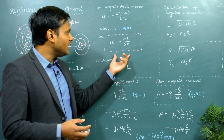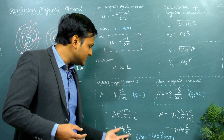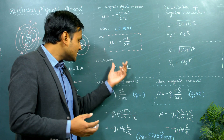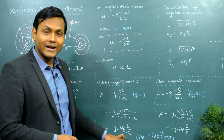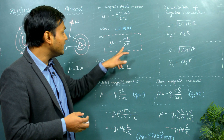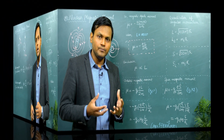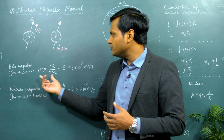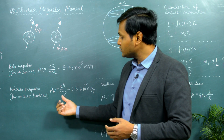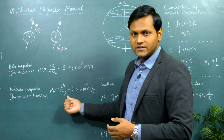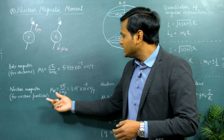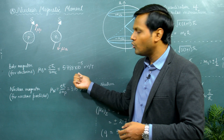In the same way that we have expressed the magnetic moment of electrons, we can also represent the magnetic moments of nuclear particles like neutrons and protons in a similar fashion. Instead of using the Bohr magneton, we will use another quantity known as the nuclear magneton, where instead of having the electron's mass we will have the mass of a proton. Since the mass of the proton is greater compared to the mass of the electron, the nuclear magneton has a value which is smaller compared to the Bohr magneton itself.